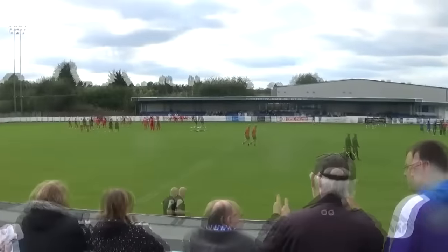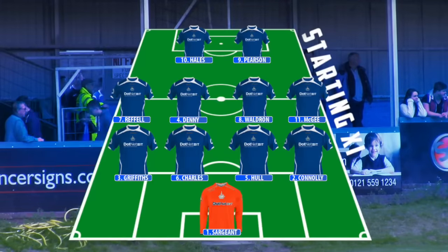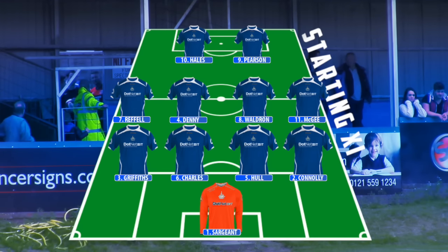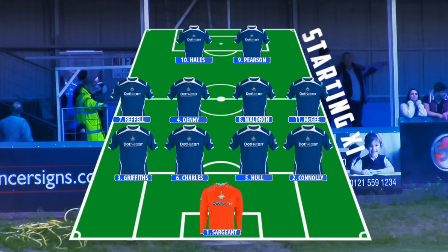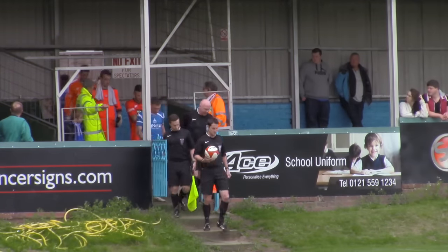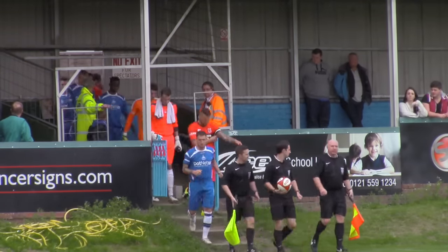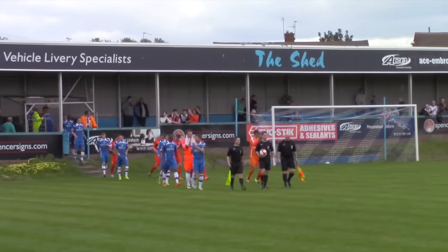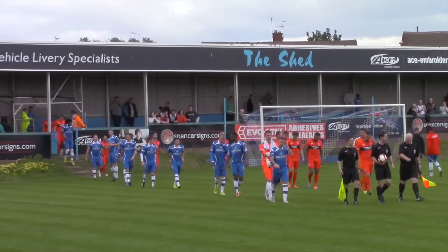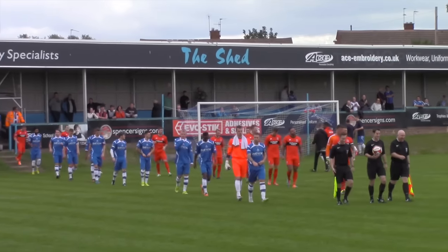Let's go through the Hal's Owen starting lineup today. Number 1 Matt Sargent, Number 2 Luke Connolly, Number 3 Aaron Griffiths, Number 4 and Captain Jay Denny, Number 5 Joe Hall, Number 6 Anthony Charles, Number 7 Cain Ruffell, Number 8 Dean Waldron, Number 9 Greg Pearson, Number 10 Rhys Hales, Number 11 George McGee.